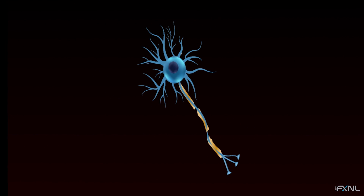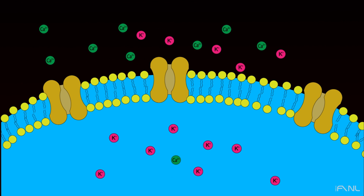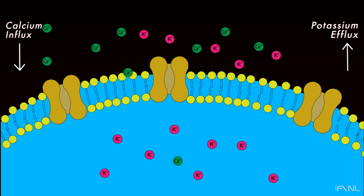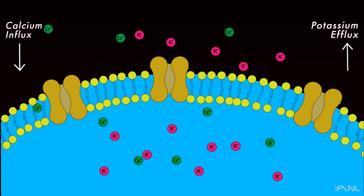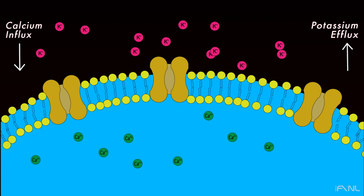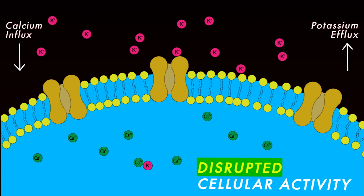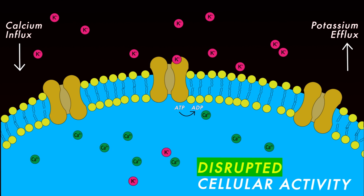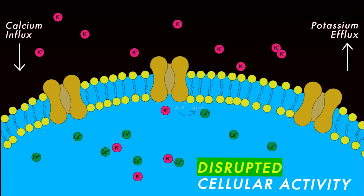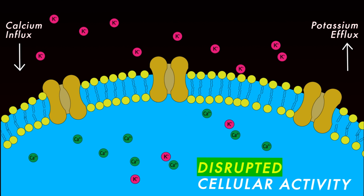After an injury to the brain, two major events unfold. Firstly, activity at the cellular level is disrupted, leading to a loss of potassium ions and an influx of calcium ions. Ion pumps work overtime to return this activity to normal, which requires a lot of energy in the form of glucose.